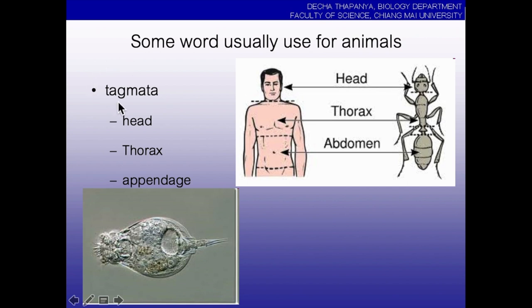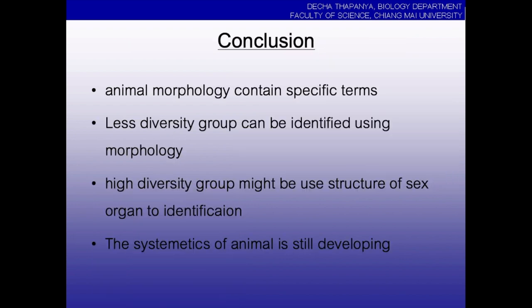Tagmata — many kinds of animals have tagmata. Tagmata means the set or group of body regions, like the head. Animals usually contain three tagmata: head, thorax, and abdomen.